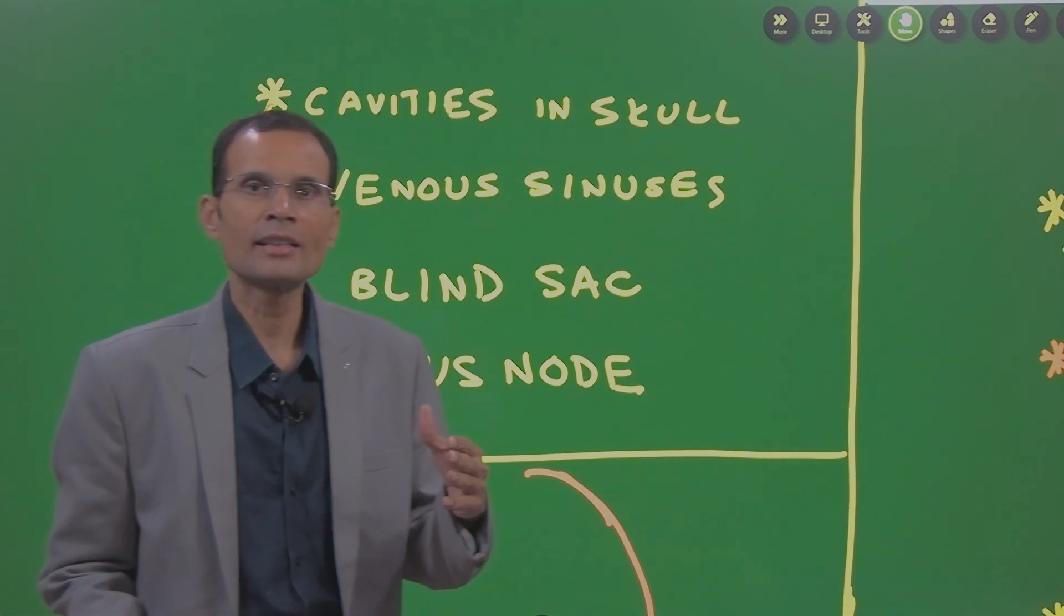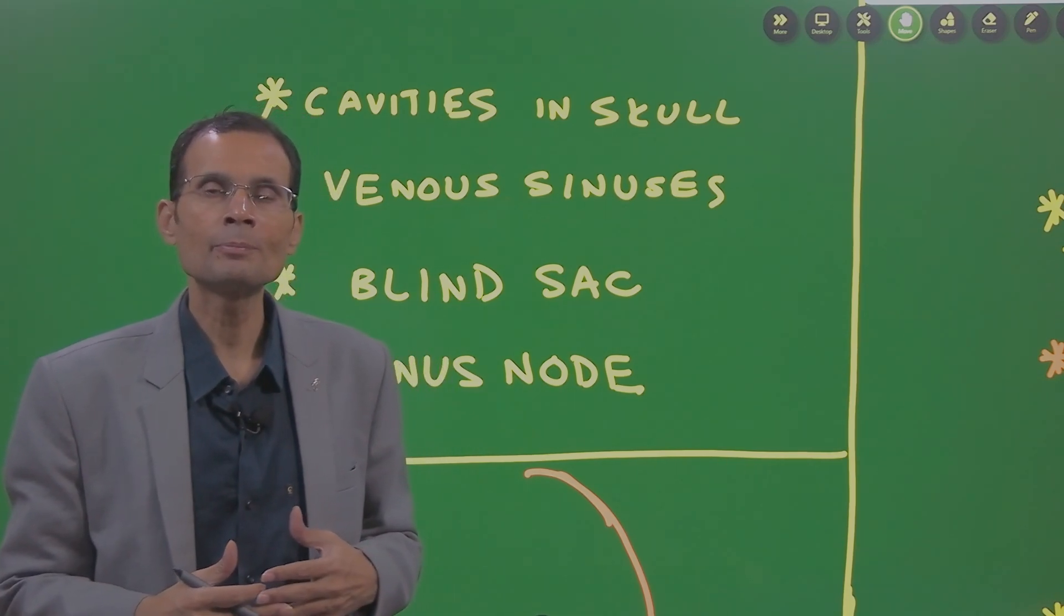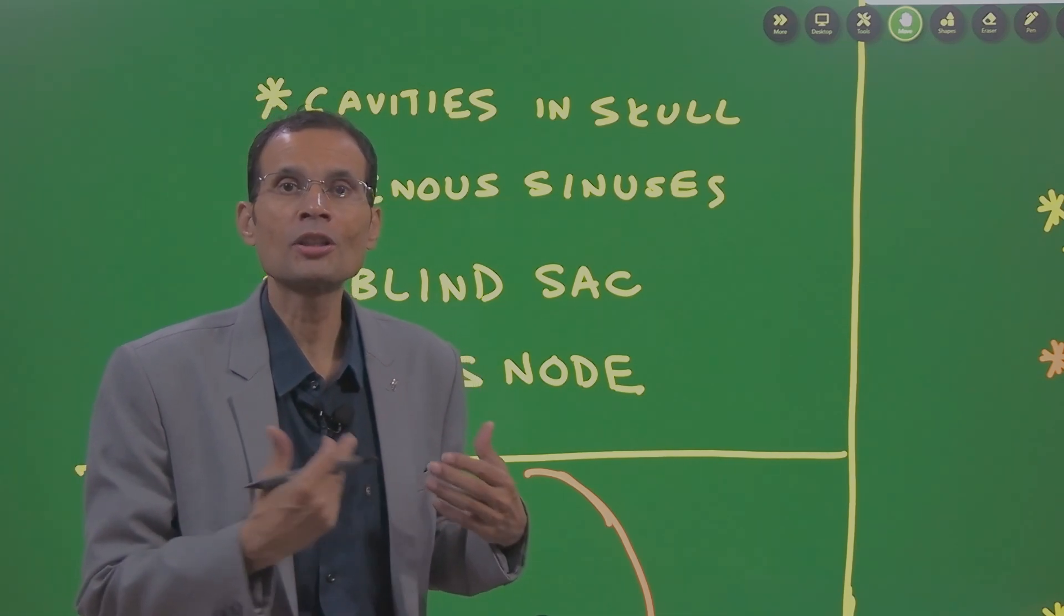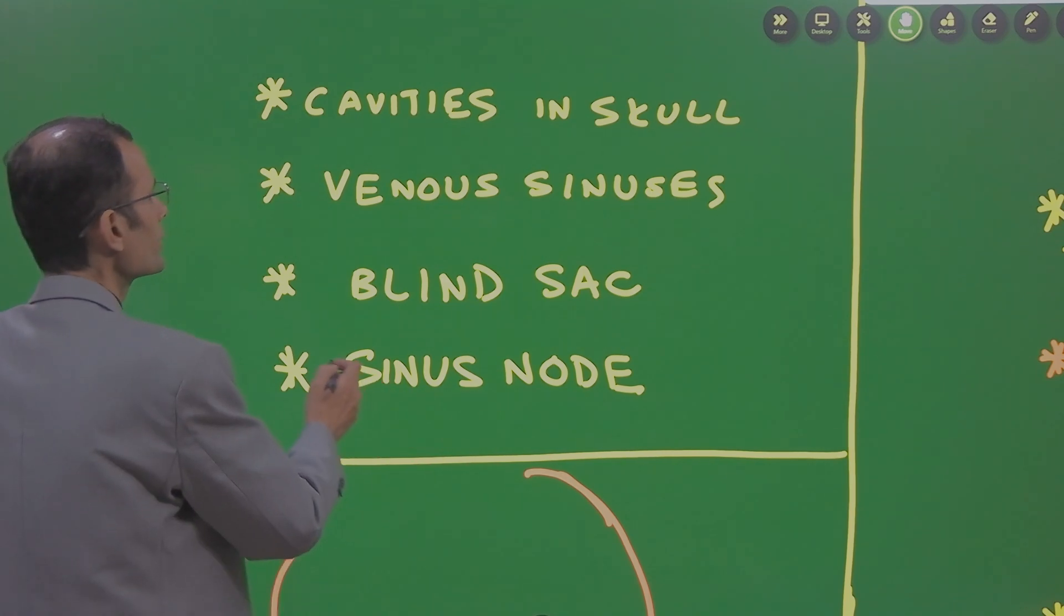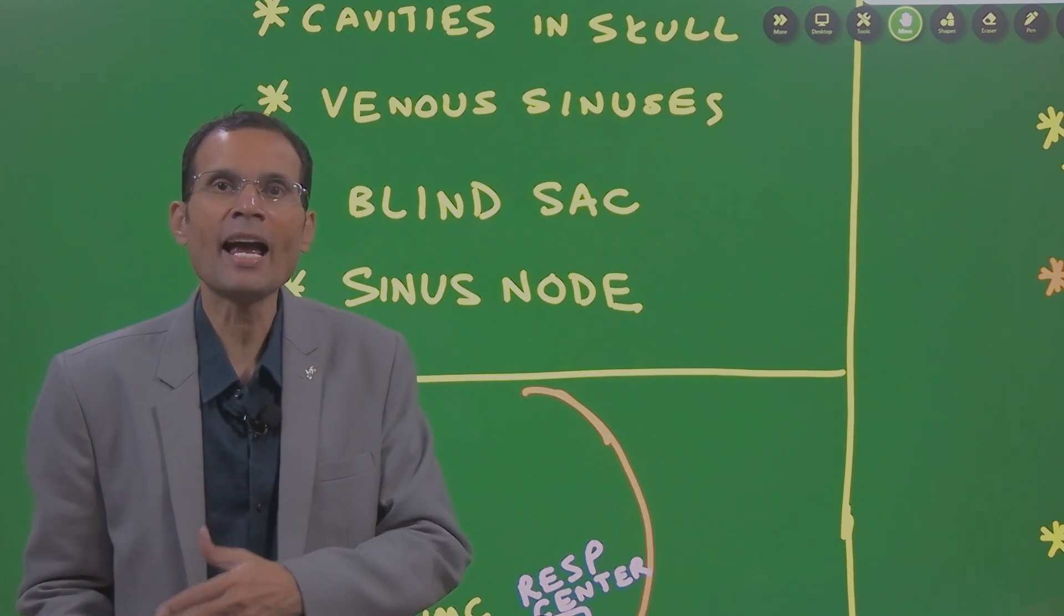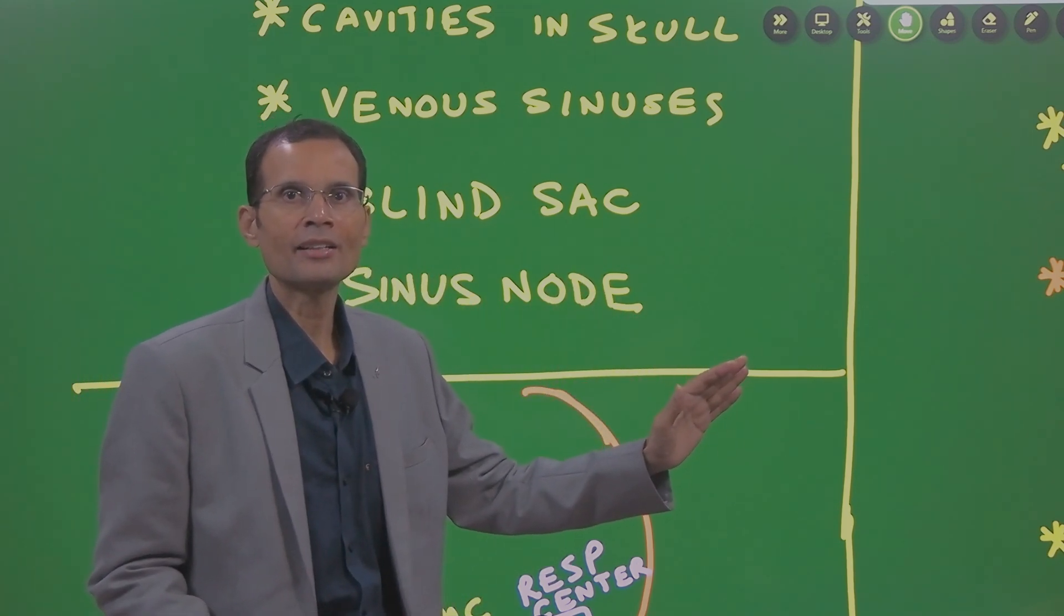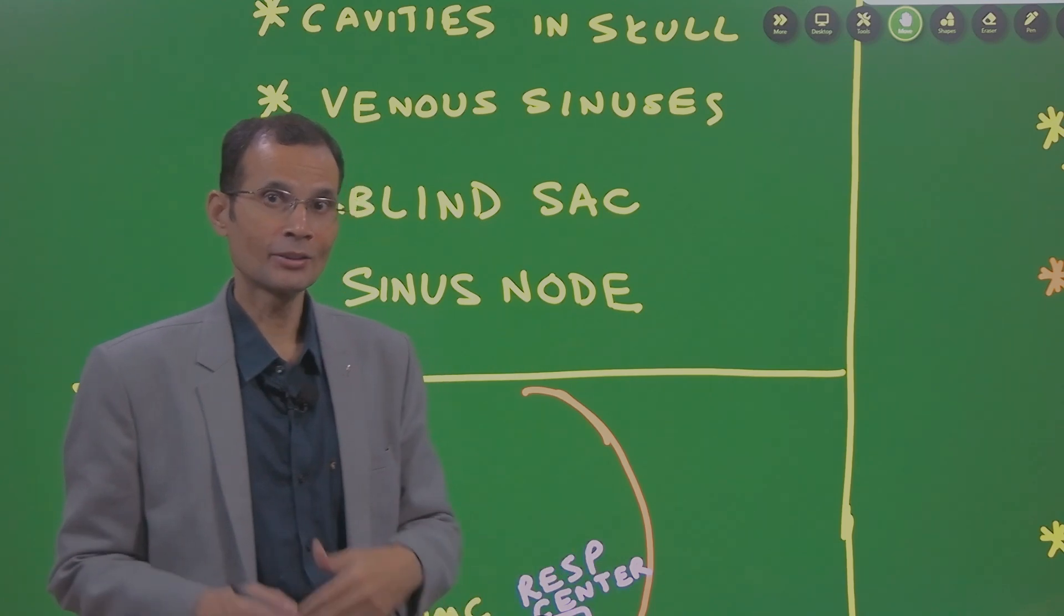There are venous sinuses, meaning the blood vessels in the cerebrum or coronary sinus, blood vessels. Then sinus also means in surgery, it is a blind sac which is open on one end but not on the other end. When it opens at the other end, it is called as fistula.